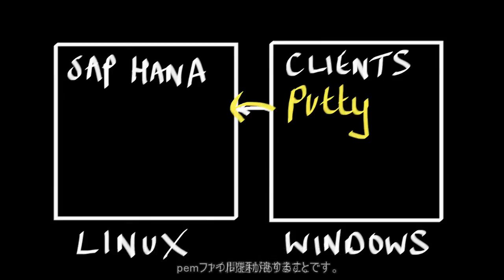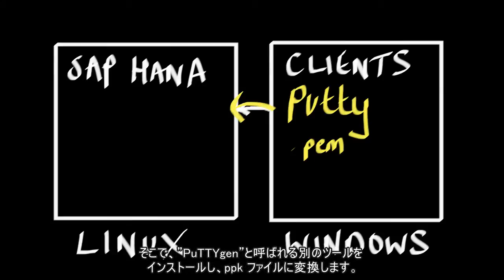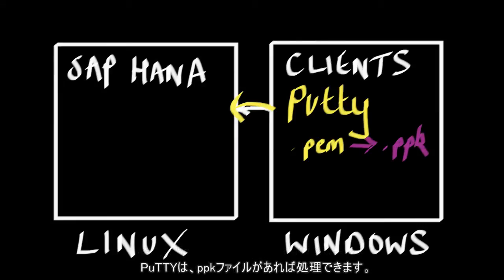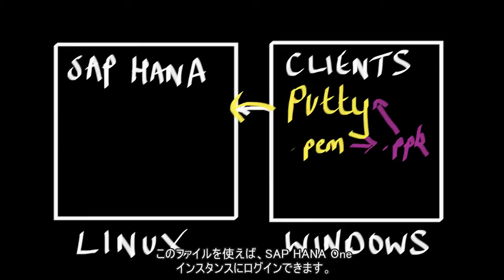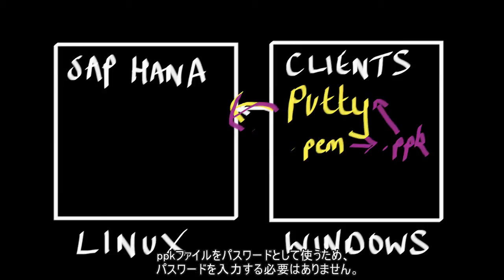Now there's a small issue. Remember we're using a PEM file — PuTTY can't really use a PEM file as a key pair. So we're going to install another tool called PuTTYgen, which will convert this file to a PPK file. Once we've got the PPK file, PuTTY will use it to log into our SAP HANA 1 instance. We'll log in as the root user without a password, using the PPK file instead.